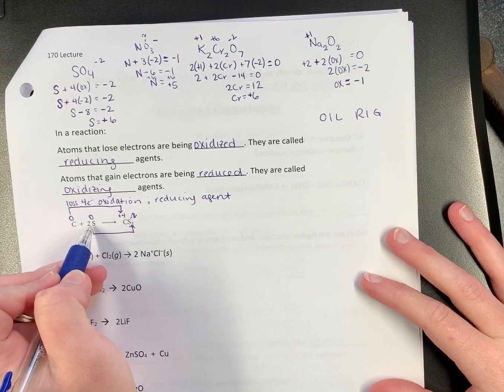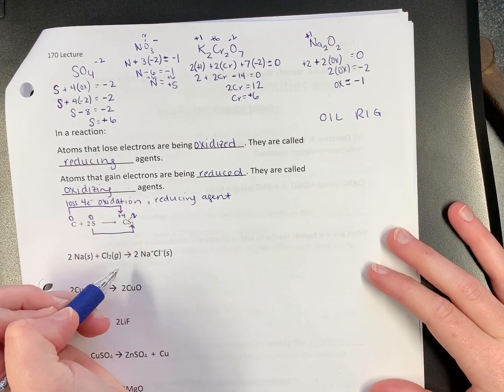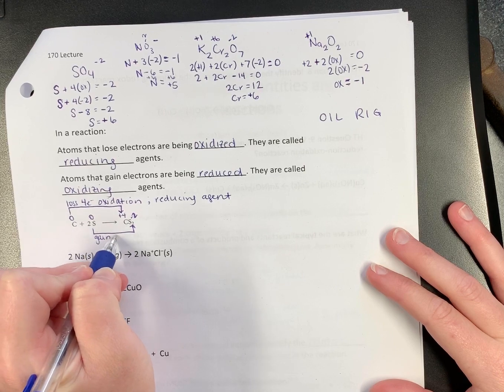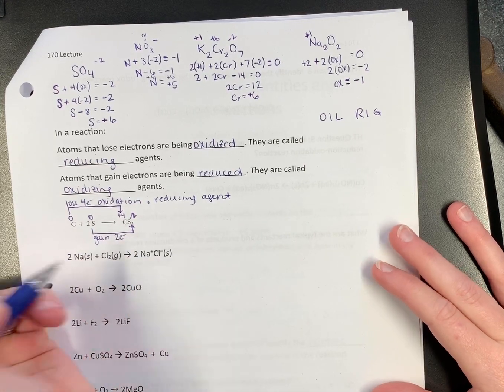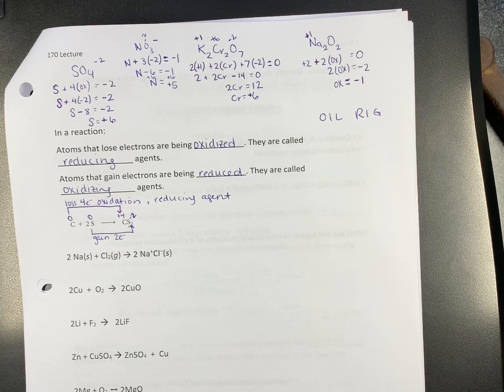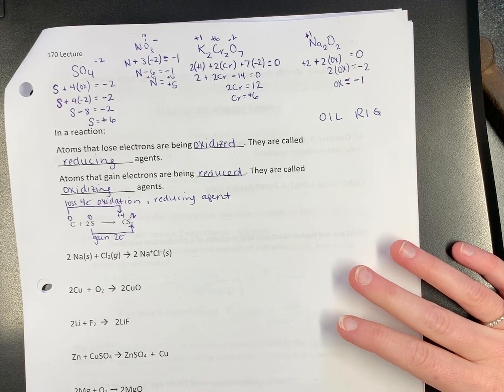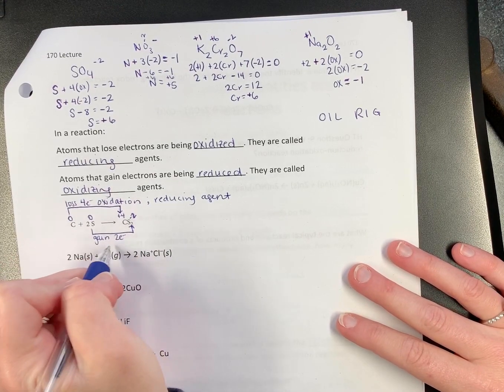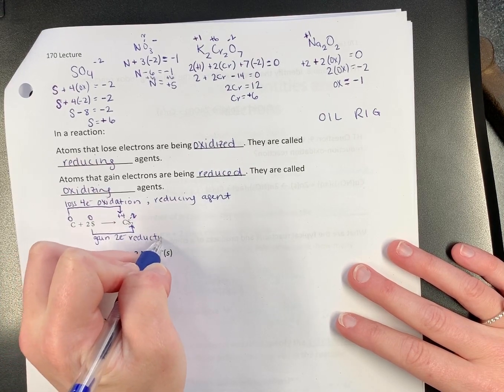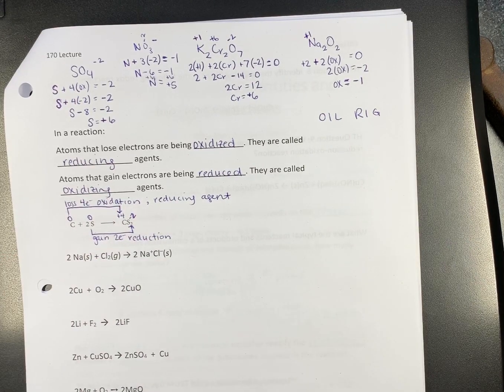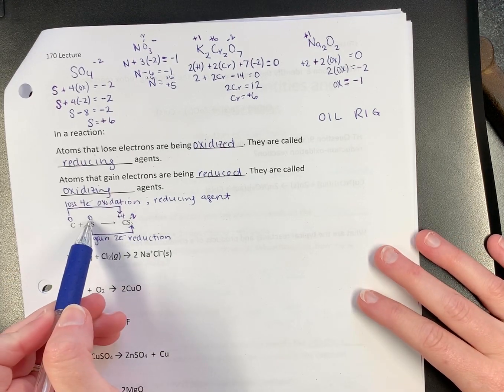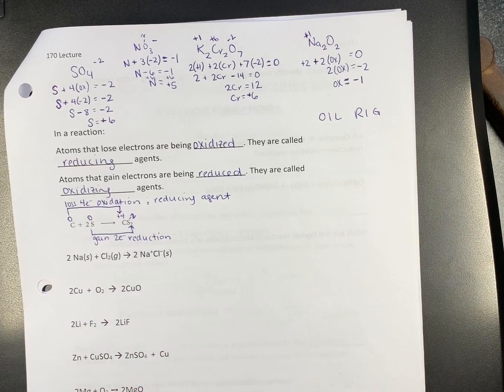Sulfur is going from zero to negative two. Is it gaining or losing? Gaining. So it is gaining two electrons. Gaining two electrons means oxidation or reduction? Reduction. You can use deductive reasoning for this as well.